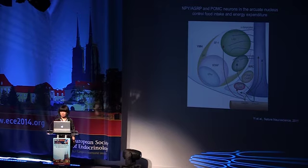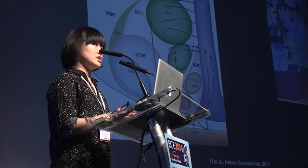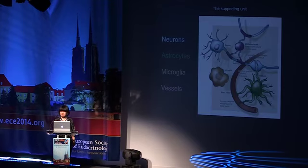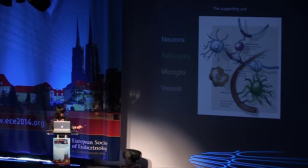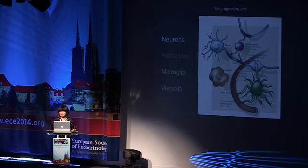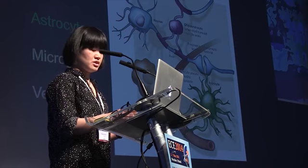Neuroscientists in the metabolism field have paid so much attention to neurons over the last several decades, trying to figure out cellular signals and pathways, but we have neglected the supporting units: astrocytes, microglia, and blood vessels. Astrocytes take care of neuronal growth, especially axon development and synaptic communication. Microglia are the cleaning crew — macrophages derived from the periphery that entered the brain at a very early developmental stage. Vessels bring nutrients, oxygen, and remove waste.